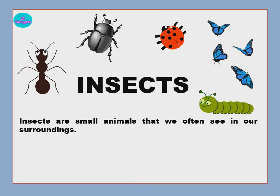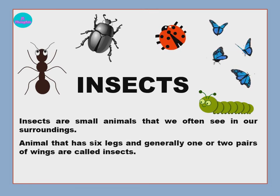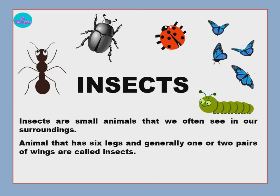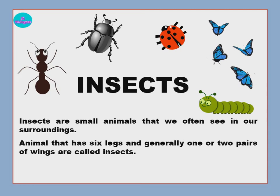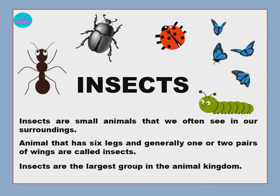Insects are small animals that we often see in our surroundings. Animals that have six legs and generally one or two pairs of wings are called insects. Insects are the largest group in the animal kingdom.